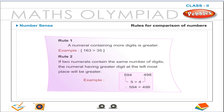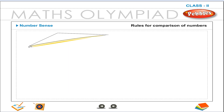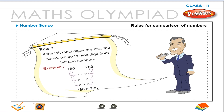Rules for comparison of numbers. Rule 1: A numeral containing more digits is greater. Example: 163 is greater than 35. Rule 2: If two numerals contain the same number of digits, the numeral having the greater digit at the leftmost place will be greater. Rule 3: If the leftmost digits are also the same, we go to the next digit from the left and compare.